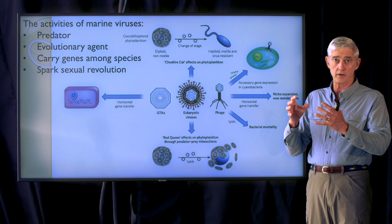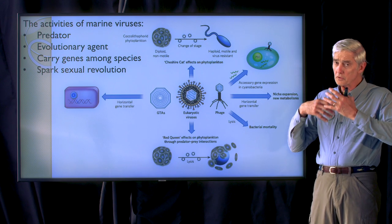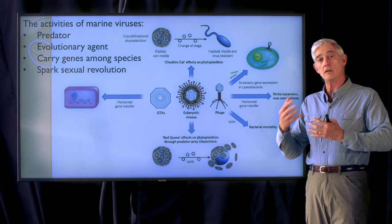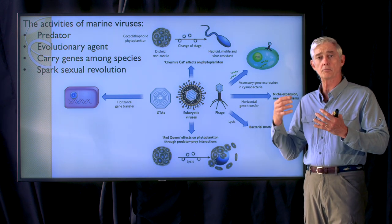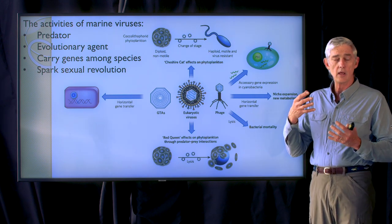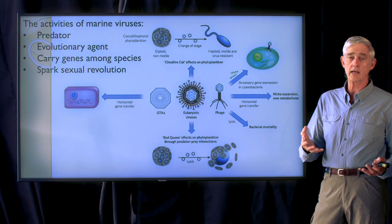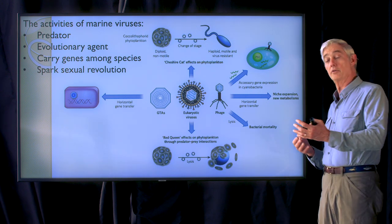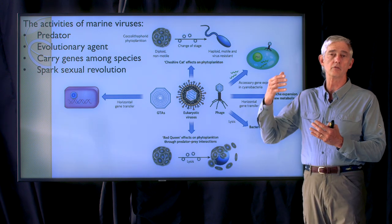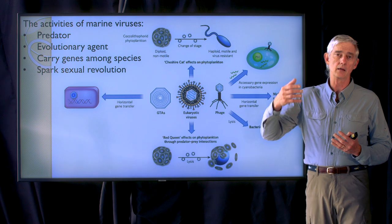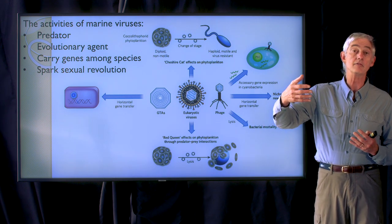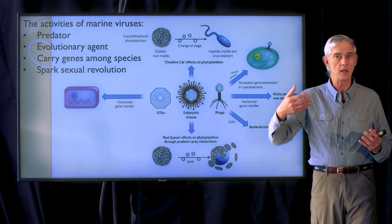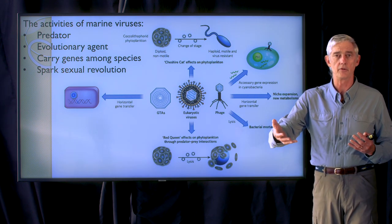And so there's a co-evolutionary arms race between viruses and bacteria. The bacteria with the right receptors are attacked by viruses, but they can evolve different receptors, which means they are no longer attacked by those viruses. The viruses can evolve different ways of attacking the evolved microbes to then be able to have access to them.